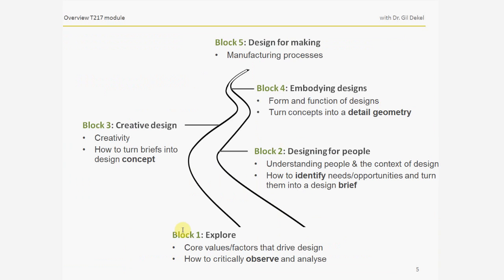There are five blocks in our module. In Block 1, you will learn how to critically observe and analyze — the emphasis is observation skills. Once we've learned observation skills, we will then learn to identify specific needs and opportunities within what we have observed, and turn them into a design brief. Then we turn the design brief into design concepts, which we will turn into detailed geometry design, and then factor in processes.